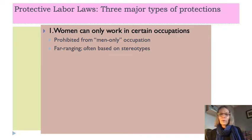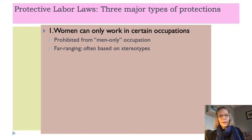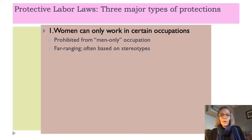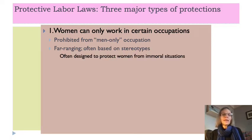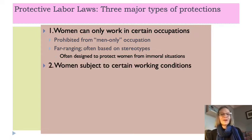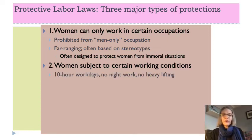These occupational restrictions reflected gender stereotypes for men as well — for example, if a woman bartended where mostly men were present, she might be subject to dangers from predatory men. A woman couldn't go into a home alone as a meter reader. An elevator operator might end up alone in an elevator with a man. So these protective labor laws prohibited women from certain occupations to protect them from these so-called immoral situations. Women were also subject to certain working conditions.